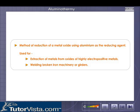Aluminothermy is the method of reduction of a metal oxide using aluminum as a reducing agent. It is used for extraction of metals from oxides of highly electropositive metals and for welding broken iron machinery or girders.